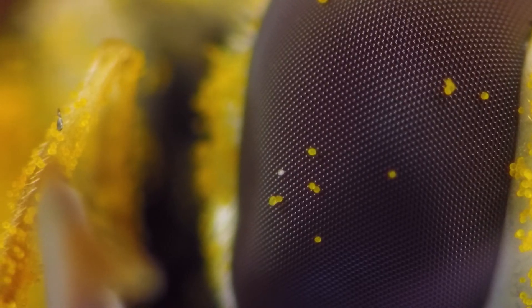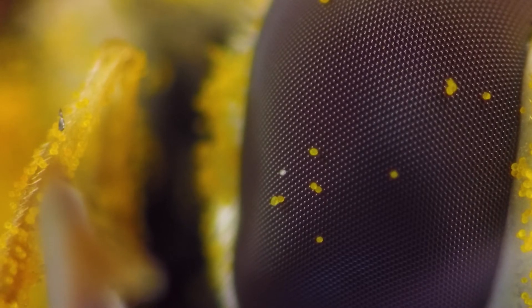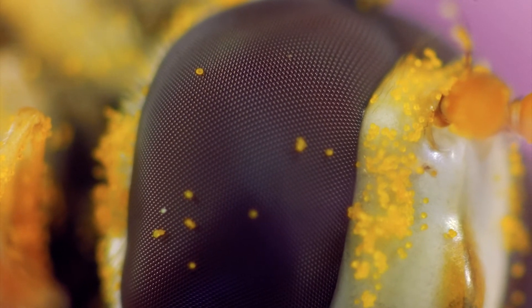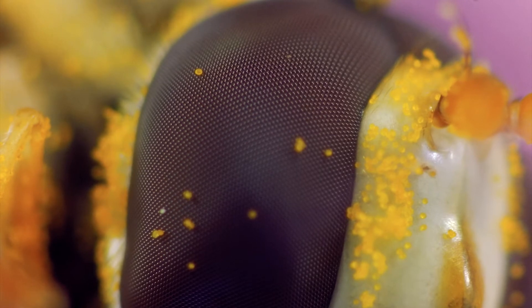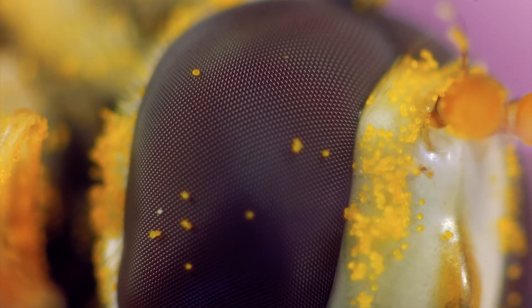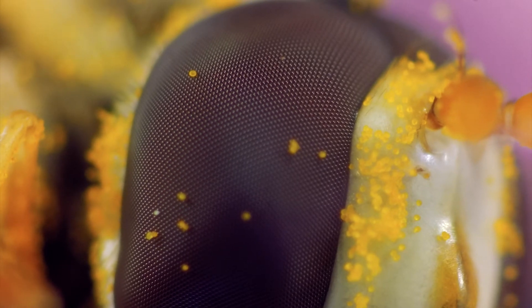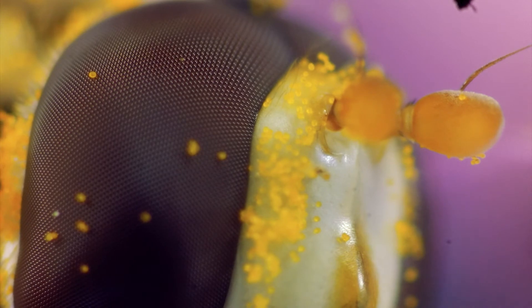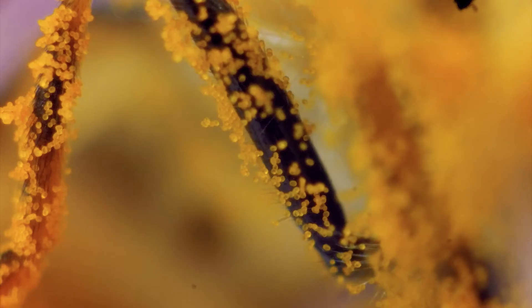So this is a hoverfly that's died and he's been on this flower for a while maybe. When they're alive they clean themselves quite regularly and he's just like completely covered with pollen now. It's kind of beautiful but weird. That's part of the legs and you can just see the coating.